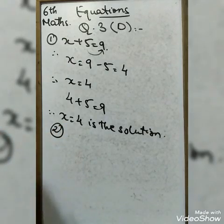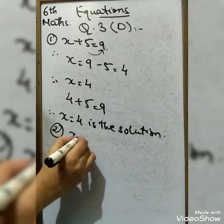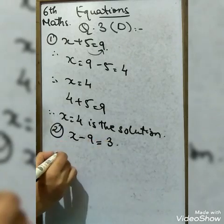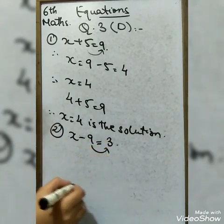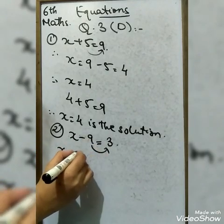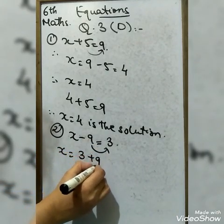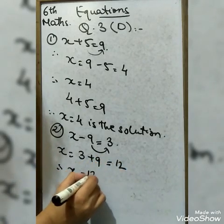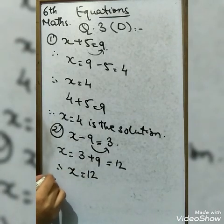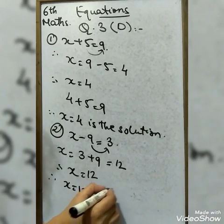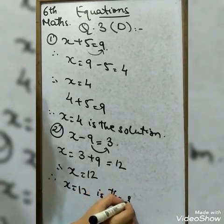Second: x − 9 = 3. Moving 9 to the other side: x = 3 + 9 = 12. Therefore x = 12 is the solution.